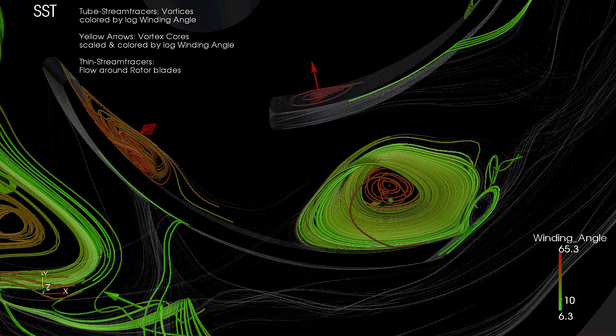In this video, we color the vortices and vortex cores by the log of winding angle, allowing us to distinguish tightly wound vortices from the larger, less tightly wound vortices.